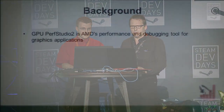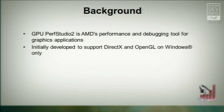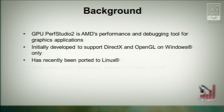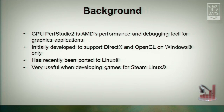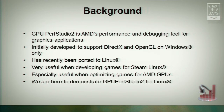Here's the background to our talk. GPU Perf Studio 2 is AMD's performance and debugging tool for graphics applications. Initially, it was developed to support DX and OpenGL on Windows only, and recently we've ported it to Linux. This can be very useful when developing games for Steam Linux, and especially useful when optimizing games for AMD GPUs. We're here today to tell you about the product and demo it working on Linux.